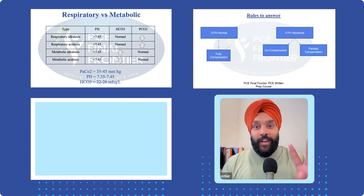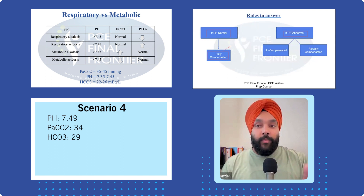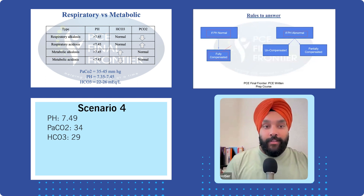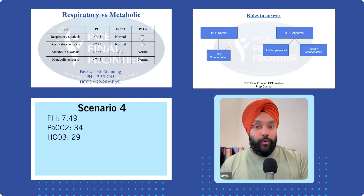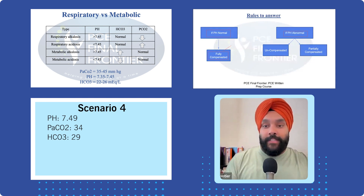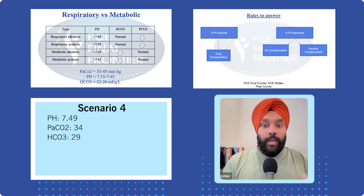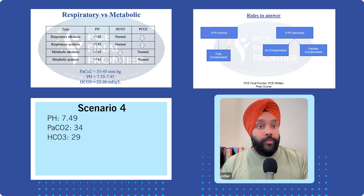Scenario four: pH is 7.49, PaCO2 is 34, HCO3 is 29. Is pH normal or not? That's our first job. The pH is 7.49 — it's increased, towards alkaline.